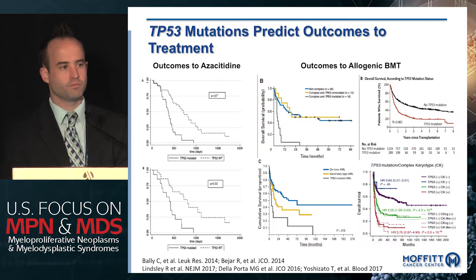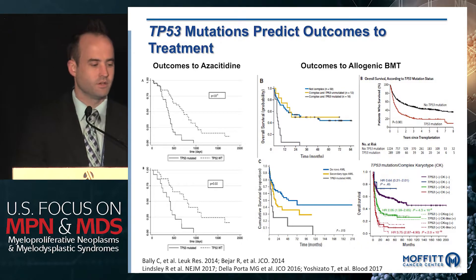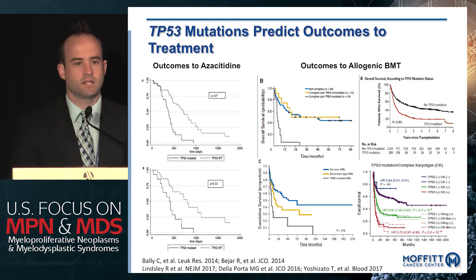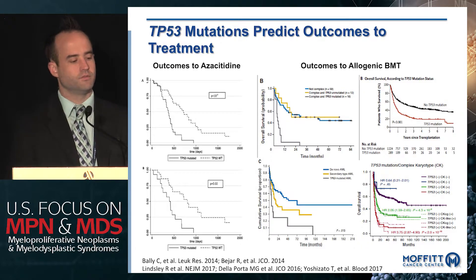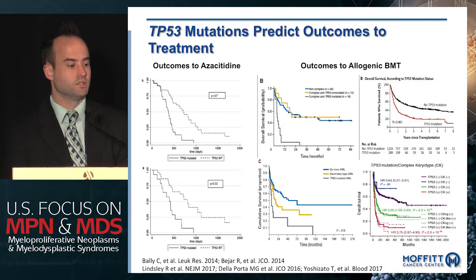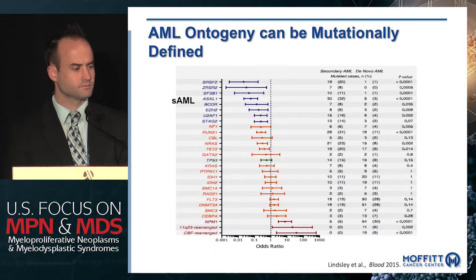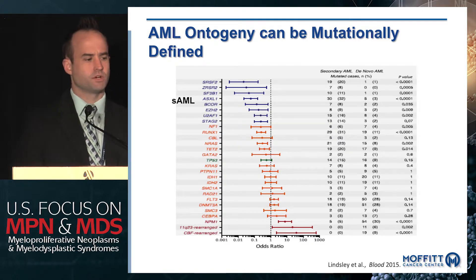For outcomes to hypomethylating agents, multiple groups have shown that p53-mutant patients do significantly worse, although response rates are no different between mutant and wild-type groups. Regarding transplant outcomes, data from four large published cohorts show that p53 is the only gene validated across all of them to predict for poor survival post-transplant. However, p53-mutant patients without complex karyotype — likely a low allele burden group — showed good long-term survival, suggesting that lowering VAF over treatment or having a low allele burden at diagnosis may be beneficial.